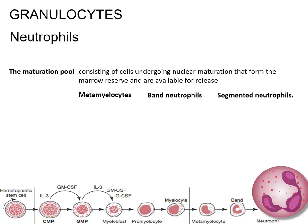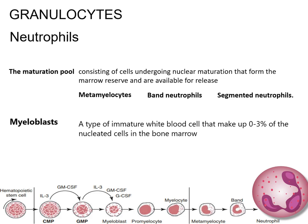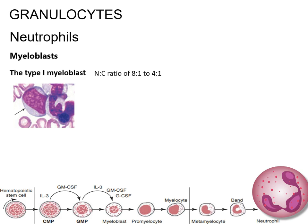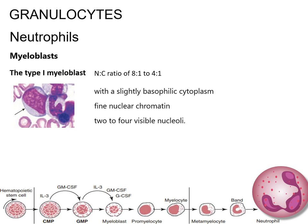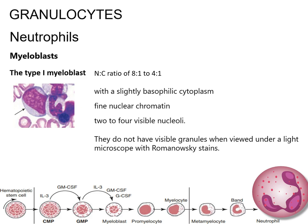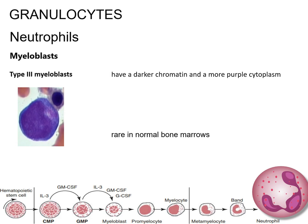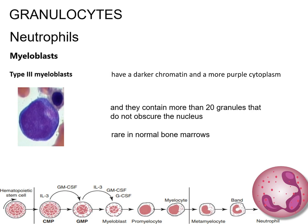Myeloblasts are a type of immature white blood cell that make up 0–3% of the nucleated cells in the bone marrow, measuring between 14 and 20 mm in diameter. They are classified into three types. The type 1 myeloblast has a high nucleus-to-cytoplasm ratio of 8:1 to 4:1, with slightly basophilic cytoplasm, fine nuclear chromatin, and 2 to 4 visible nucleoli, with no visible granules under light microscopy. The type 2 myeloblast shows dispersed primary azurophilic granules not exceeding 20 per cell. Type 3 myeloblasts have darker chromatin, more purple cytoplasm, and more than 20 granules that do not obscure the nucleus; they are rare in normal bone marrows but can be seen in certain types of acute myeloid leukemias.